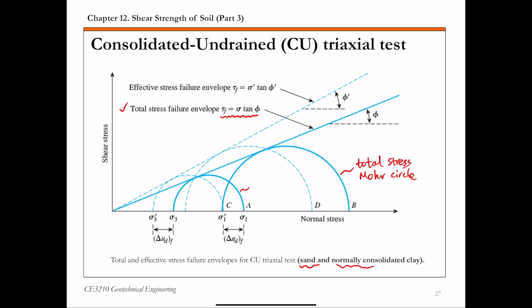You also have the two dashed-line Mohr circles, which are the effective stress Mohr circles. The failure envelope fitted to the effective stress Mohr circles is called the effective stress failure envelope. Again, for sand and normally consolidated clay, this failure envelope passes through the origin, giving tau F equals sigma prime times tangent of phi prime, where phi prime is the effective internal friction angle.